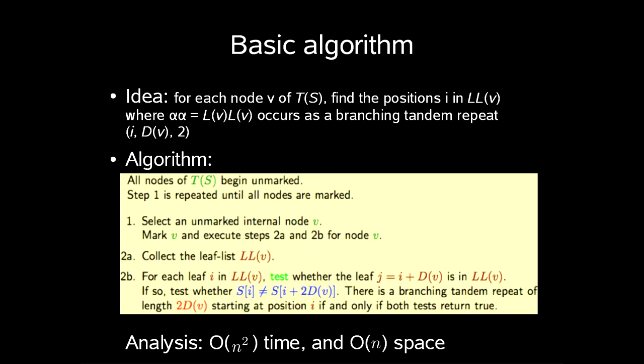Now let's get started with the basic algorithm. So the basic idea about this is that for each node v of T(S), find the position i in leaf list of v where αα is in LL(v), of course as a branching tandem repeat (i, D(v), 2). So the algorithm is as follows.